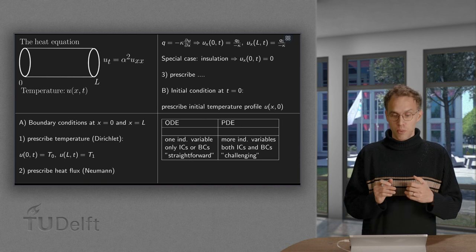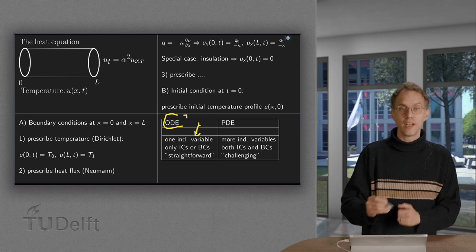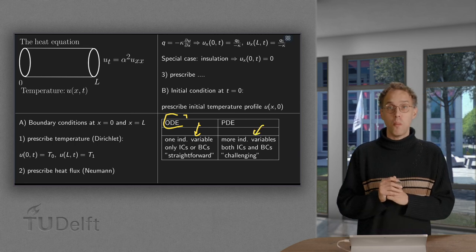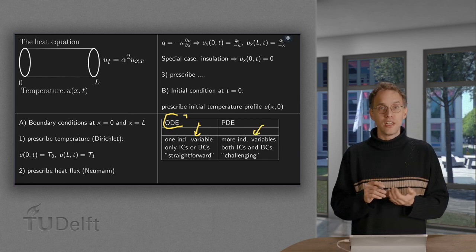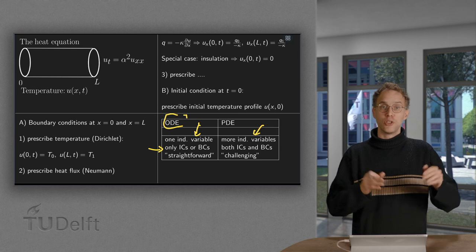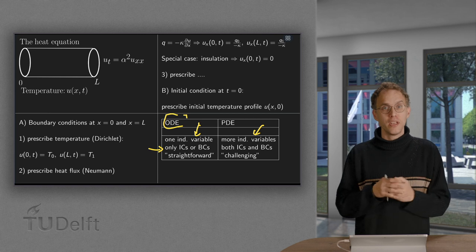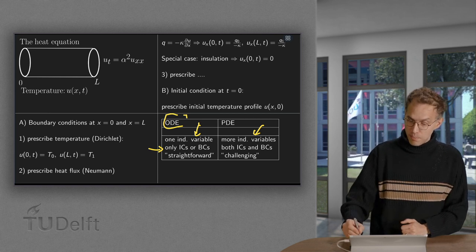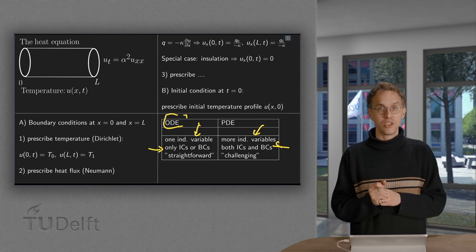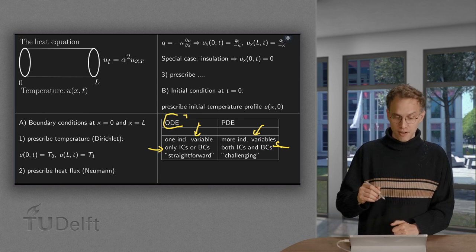Now let us do a short recap. What is the difference between ODEs and PDEs? For an ODE, you have only one independent variable. The crucial difference is for a PDE, you have more independent variables. That means that also, for an ODE, you need only to prescribe either some initial conditions or some boundary conditions. You only need to specify conditions for this one independent variable. On the contrary, for a PDE, you will always need to specify both some initial conditions and boundary conditions.